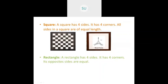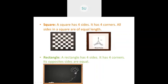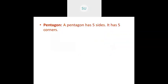A rectangle also has four sides and four corners, but it has two long sides and two short sides. Both long sides are the same length, and both short sides are the same length. Examples of rectangles include a blackboard and a door.